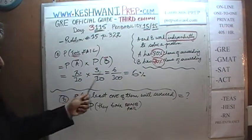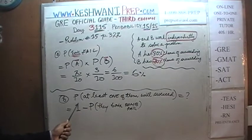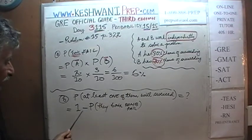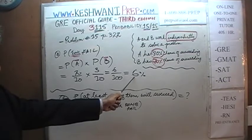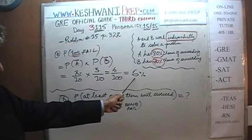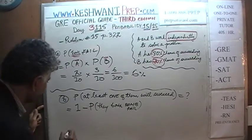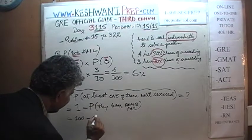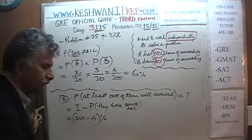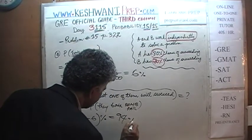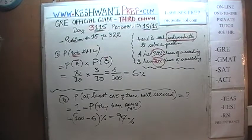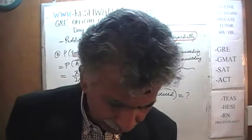The odds that they will both fail is 6%. Therefore, the odds that at least one of them succeed, which is simply 1 minus the odds that they both fail, is 100 minus 6%. This is 94%. That's all. And that was the end of it.